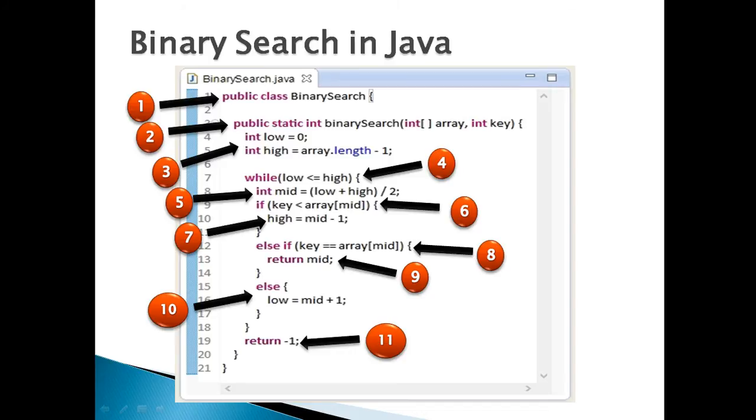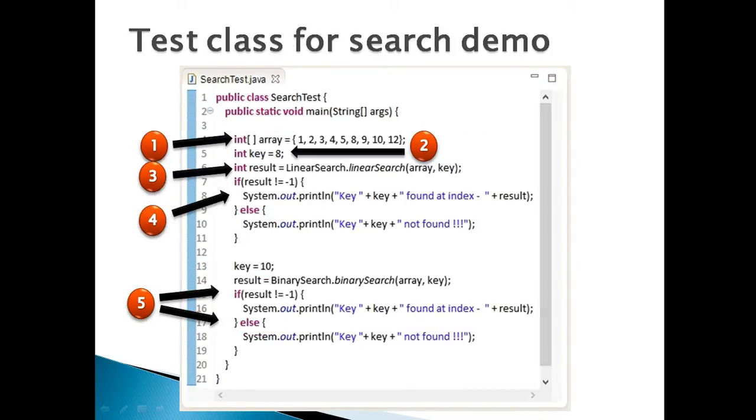Moving ahead. Let's test the linear and binary search through a test class. Step 1: In the main method create an array of few elements. Step 2: Create a key to search in the array. Step 3: Call linear search method with array and key to search. Step 4: In our case, 8 is there in array, so result will not be equal to minus 1.